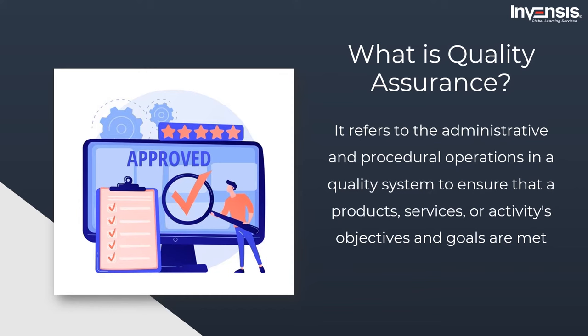The quality assurance component focuses on ensuring that quality criteria are met. On the other hand, quality control is concerned with the output of the process. Talking about the two principles of quality assurance: 'fit for purpose,' which means the product should fit the intended purpose, and 'right first time,' which means eliminating all the mistakes, are the two quality assurance principles.